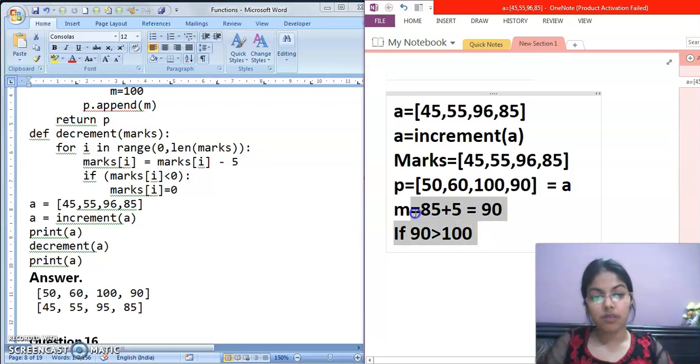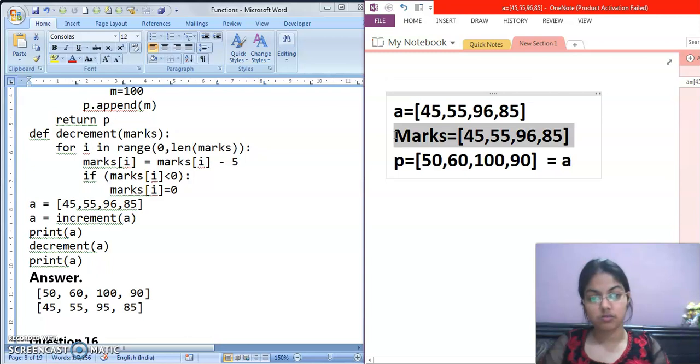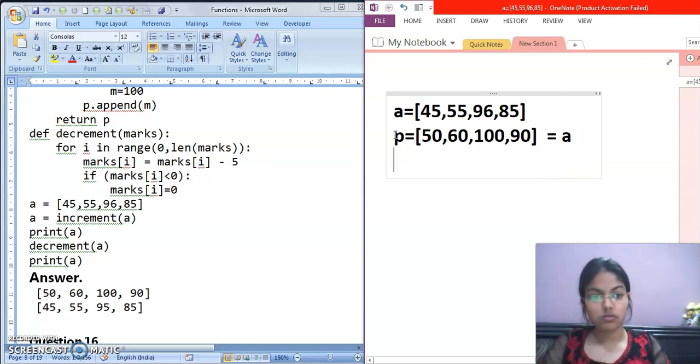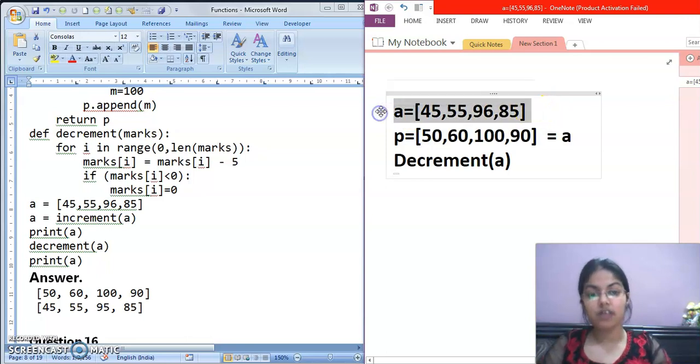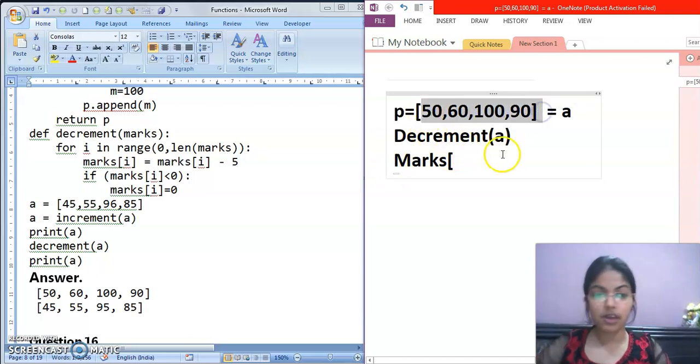So now move to the next statement decrement A. Now I am erasing this. Now which function will be called? Decrement. And decrement mein which list to pass? A. Now A which will be passed? This one. Not the original. Now in our A list these values are there.